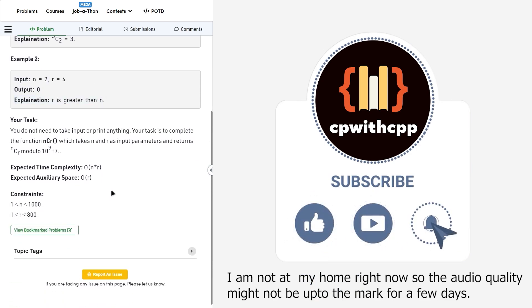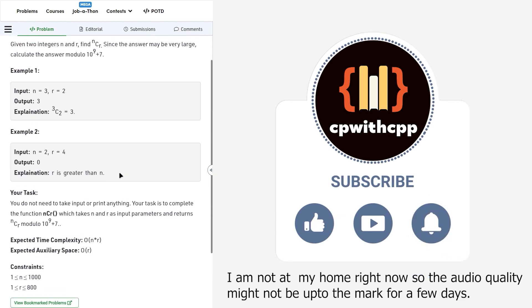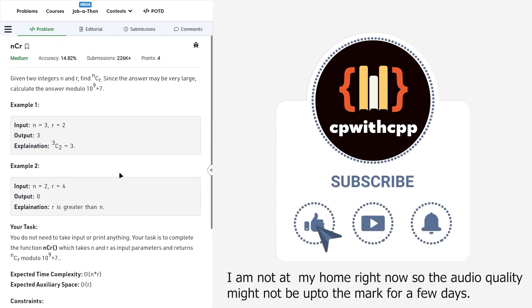The expected space and time complexity of this particular problem is a bit different. We are not going to discuss that. Instead, we are going to discuss a method which is generally useful in solving problems while you are giving contests. I'm going to tell you the method in which we are going to calculate the modular multiplicative inverse and then find the value of NCR.